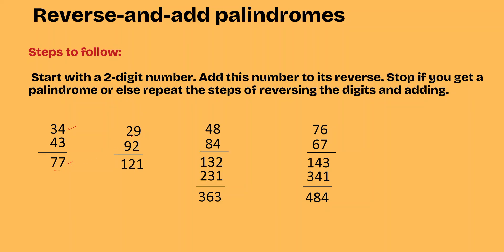Let us take the number 29. What is the reverse of 29? The reverse of 29 is 92. Upon addition of 29 and 92, we get 121. Is this a palindrome? Yes, 121 is a palindrome.